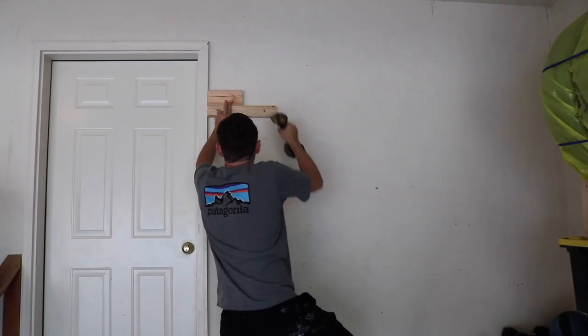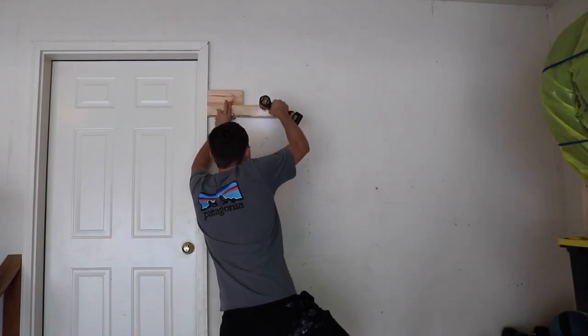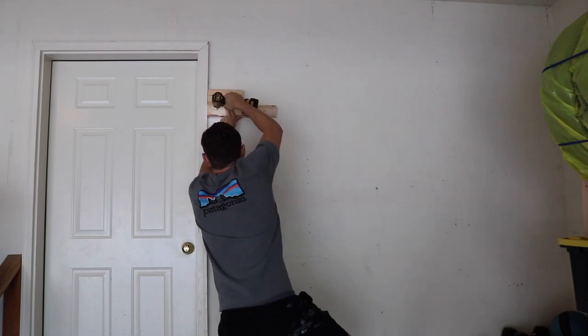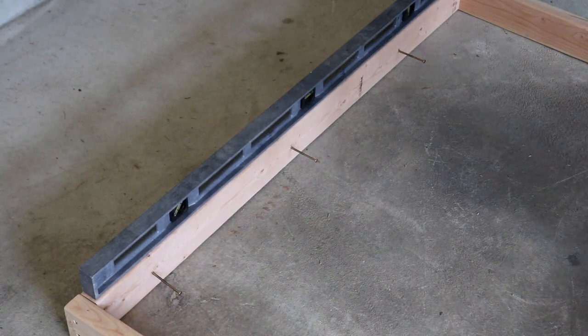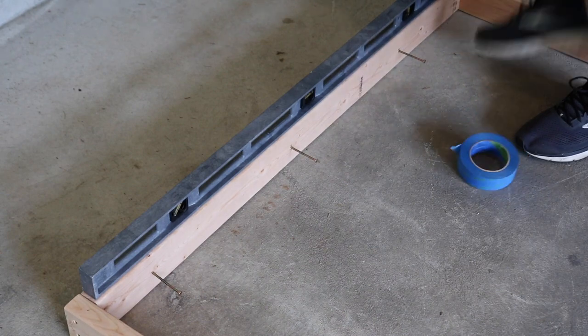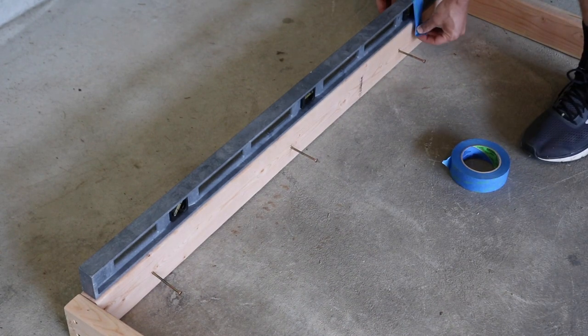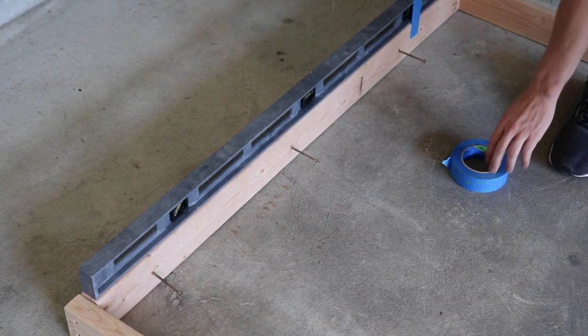And so I'm also going to attach a block to the wall so that I can rest one side on that while I fight with the other. And I'm going to put a level on here. I've decided just to tape it so that I don't have to worry about it falling off.